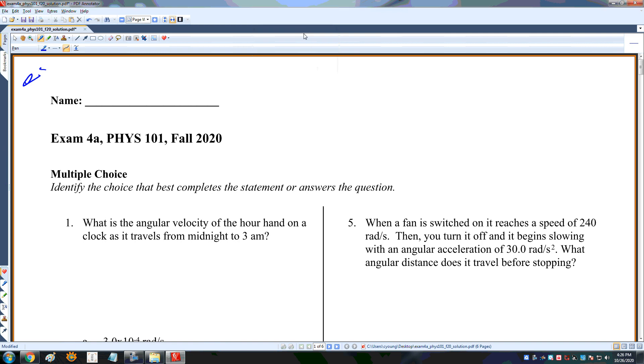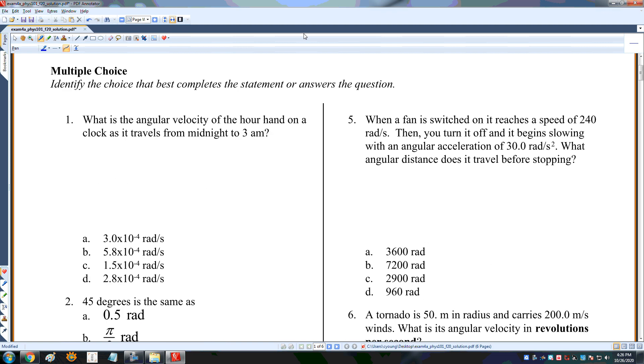This is the mini-exam, exam 4A for Physics 101, Fall 2020. What is the angular velocity of the hour hand on a clock as it travels from midnight to 3 a.m.? It travels an angular displacement of pi over 2, that's my theta. The time it travels was over 3 hours. So 3 hours is 3600 seconds times 3. Omega will be pi over 2 radians divided by 3600 times 3, and that's equal to 1.5 times 10 to the minus 4 radians per second.